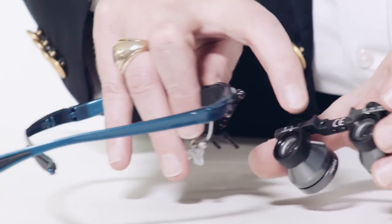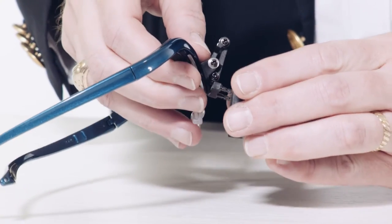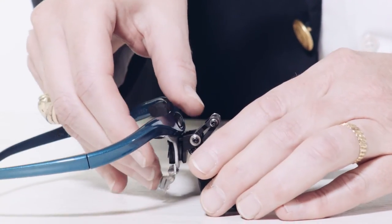Keeler loops are fit to the frame hinge by holding the loop PD bar and pushing the loops onto the hinge pins.